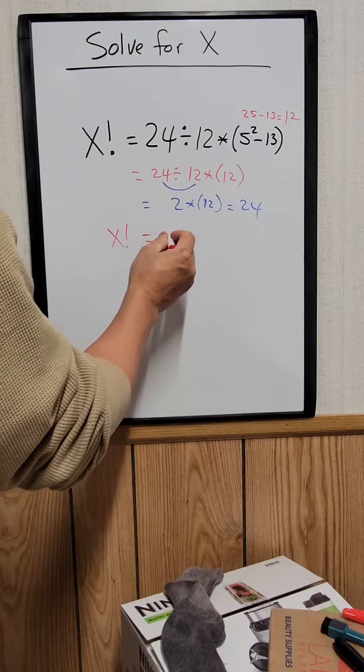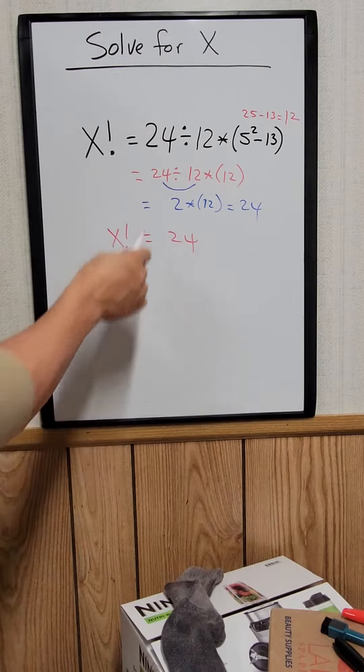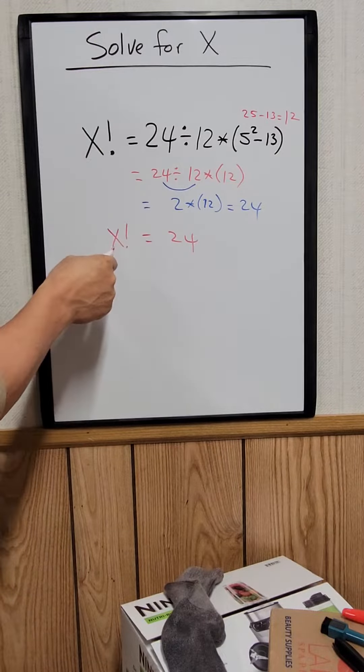X factorial equals 24. Now we want to solve for x right here, not x factorial.